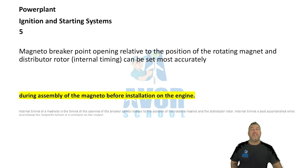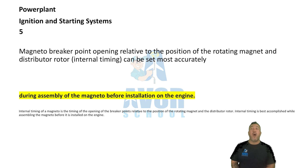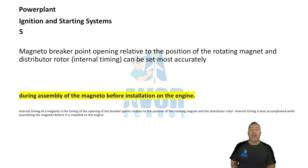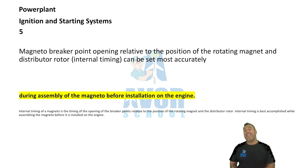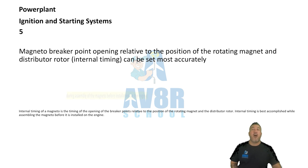Number five: During assembly of the magneto before installation on the engine. Magneto breaker points opening, relative to the position of the rotating magnet and distributor rotor, can be set most accurately during assembly of the magneto and before installation on the engine.